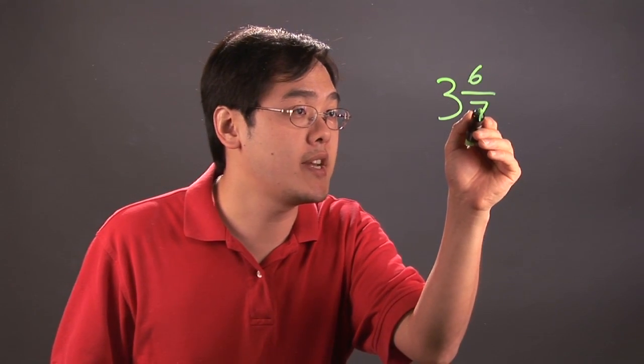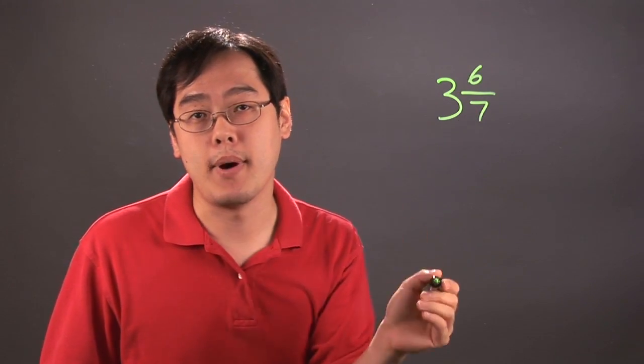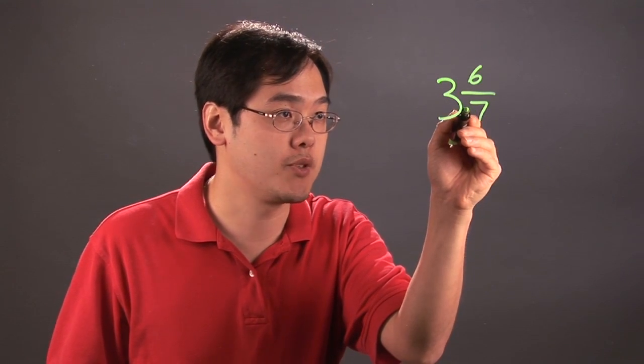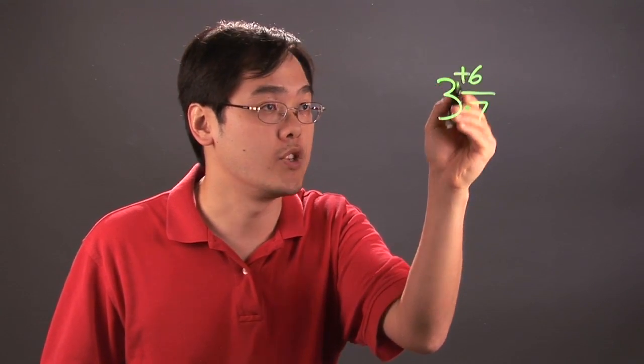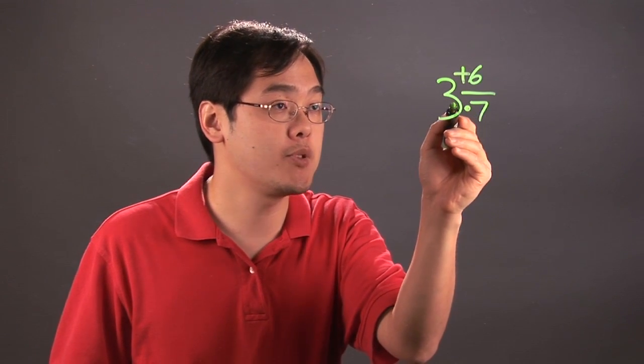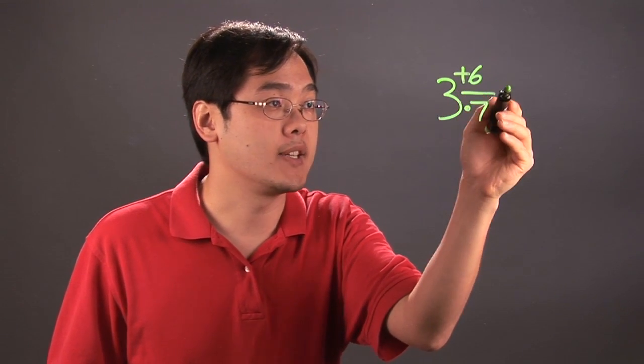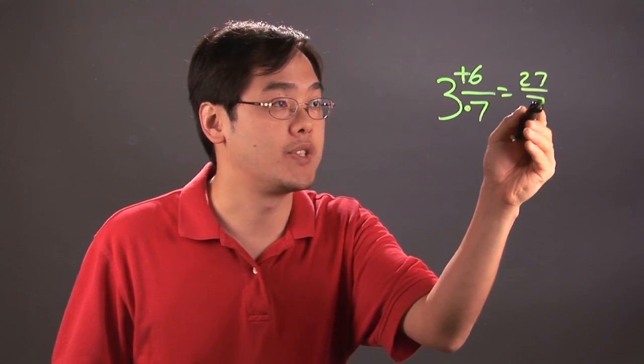So just a reminder, you've got to take the denominator and multiply by the whole number first, so 7 times 3, and then add to the numerator, which in this case is 6. So 7 times 3 is 21, add 6 is going to give you 27 over 7.